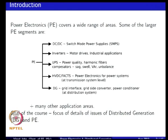Then an emerging area which is gaining increasing importance is distributed generation, where the power converter or any converter in general is used as an interface between your energy source and the grid. You can have power converters, you can have machine-based interfaces, and in general you could call it a power conditioner, which is used to interconnect a distributed generation unit with the electrical grid.